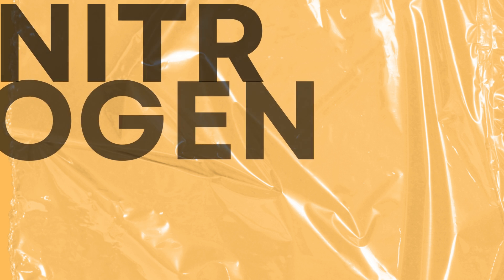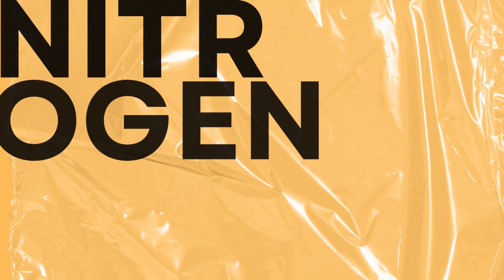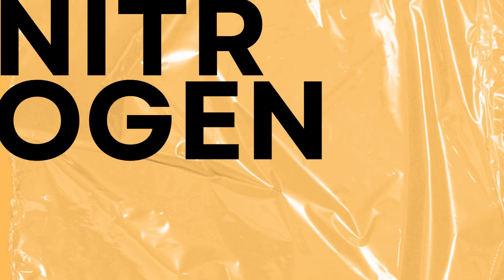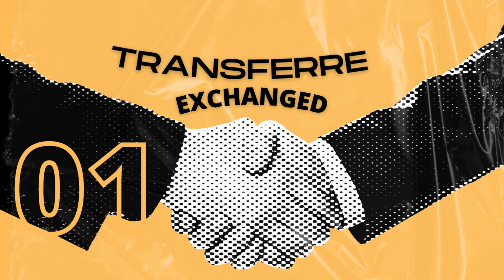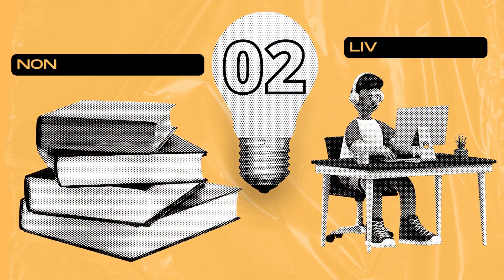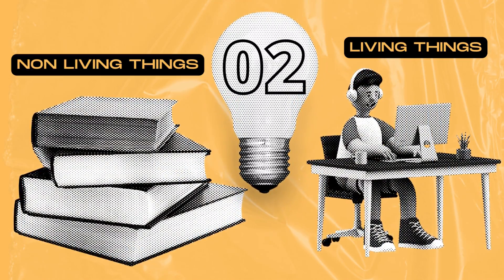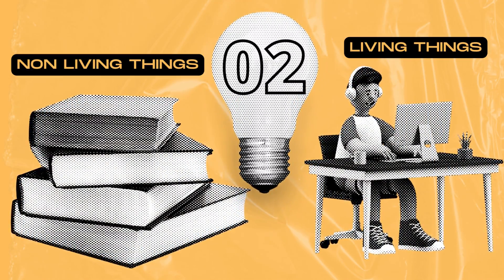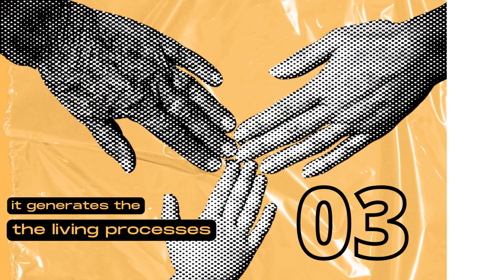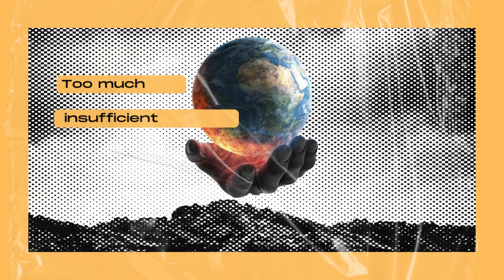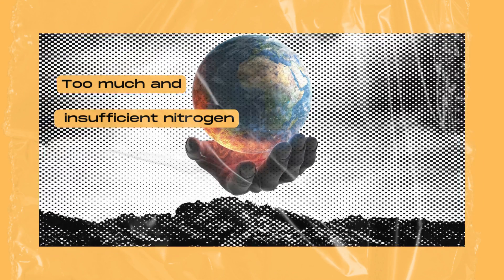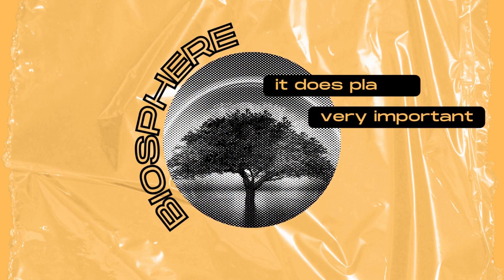Nitrogen is the most abundant element in the atmosphere at approximately 78%. It is an element transferred and exchanged continuously between living and non-living things, serving as a building block of the DNA and RNA of all living organisms, and generating living processes through a sufficient supply. Too much and insufficient nitrogen both have consequences for the environment, and it plays a very important role in the biosphere.